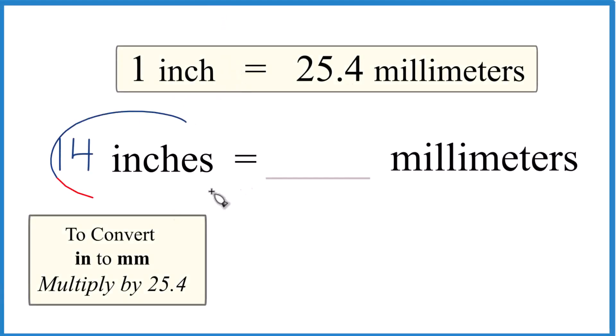If you're asked to convert 14 inches to millimeters, here's how you do it. What you need to know is that one inch equals 25.4 millimeters.